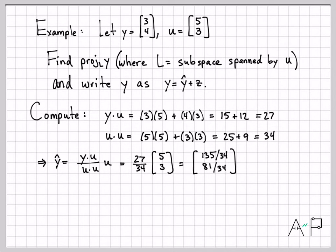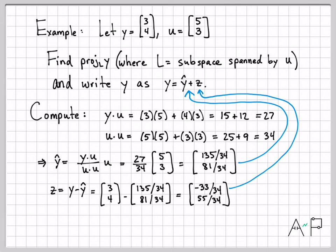If this is ŷ, I can now come back to here and solve for z, and I'm going to get y - ŷ, which is this quantity. And it's kind of ugly fractions, but if I subtract those I get this error vector right here. And again, the nice thing about this projection is this error vector has to be orthogonal to u. And we can check that.